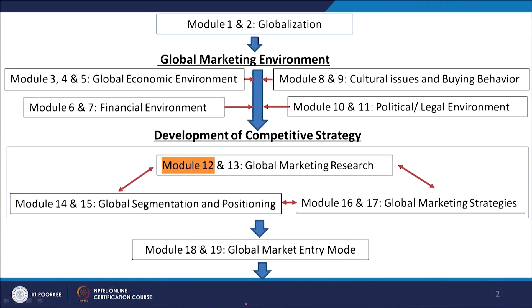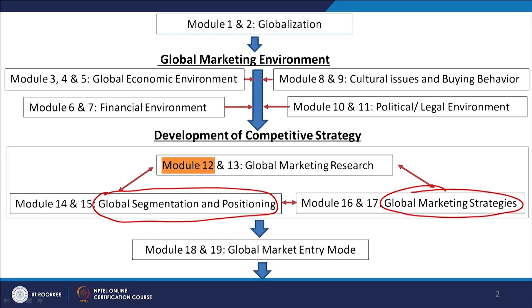From this chart, you can see that from global marketing research will come how to go about segmentation, targeting and positioning, and then the 4 P's. We will understand from global marketing research how to form the marketing strategy. That is why this module is called the development of competitive strategy. Based on these two things will come the global market entry mode.